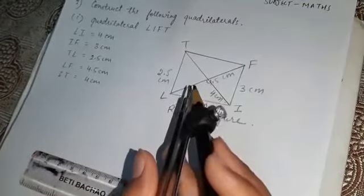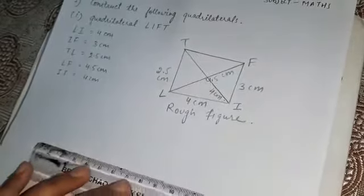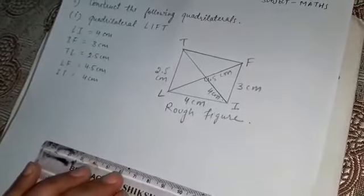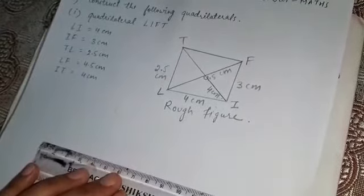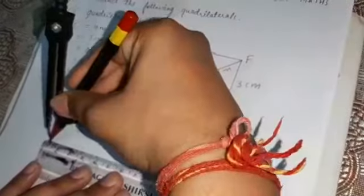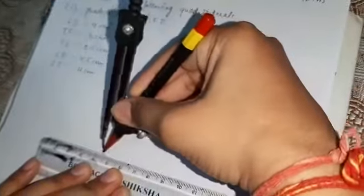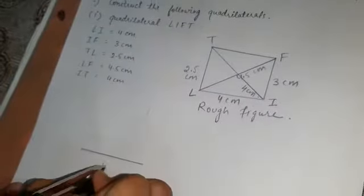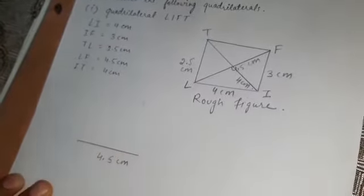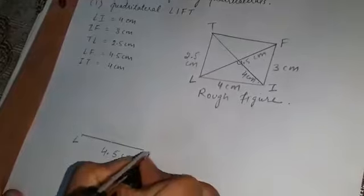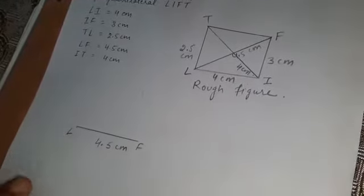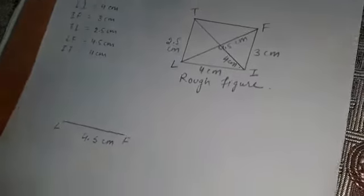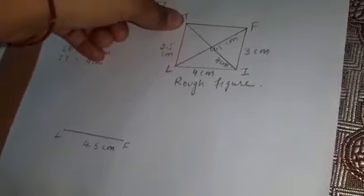LF is 4.5 centimeters, so measure it — 4.5. This is a line segment of 4.5 centimeters and the name of this line segment is LF.